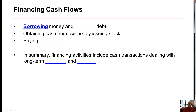The financing section includes or captures where money is being borrowed and where the company is repaying its debt, as well as obtaining cash from owners by issuing stock or paying dividends. In summary, financing activities include cash transactions dealing with long-term liabilities, issuance of new long-term debt, bonds payable, and issuing new common stock or preferred stock to investors. Dividend payments also get reported in the financing section.